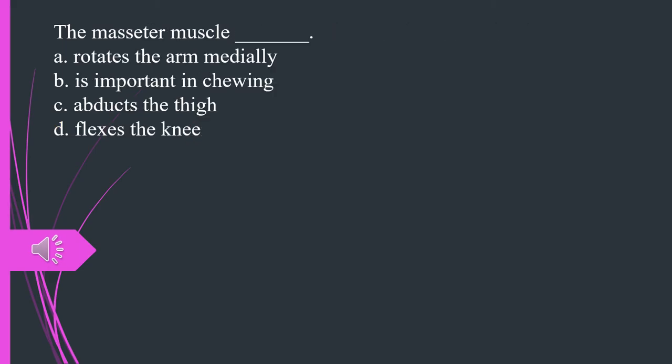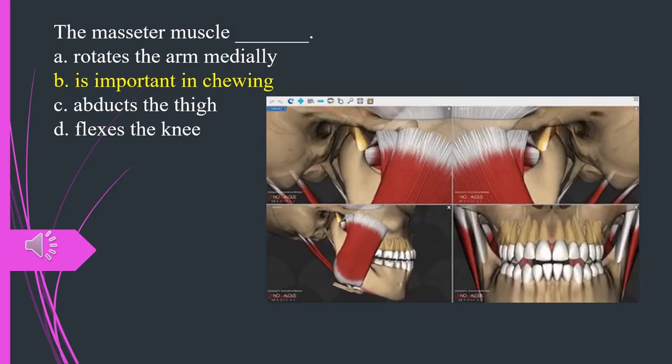The masseter muscle A. Rotates the arm medially. B. Is important in chewing. C. Abducts the thigh. D. Flexes the knee. The answer is B. Is important in chewing.